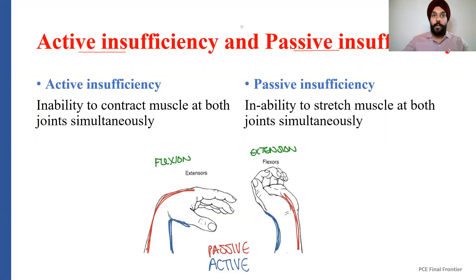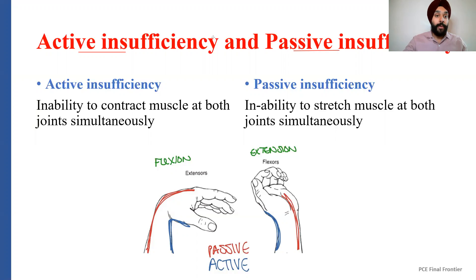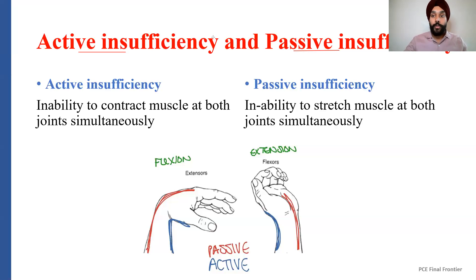Think about more two-joint muscles. Think about gastrocnemius, which is a plantarflexor and also helps in knee flexion. Think about quadriceps, which is a two-joint muscle that helps in knee extension and hip flexion. Think about the hamstrings, which is a two-joint muscle that helps in knee flexion and hip extension. Think about biceps, which helps at the shoulder and at the elbow — shoulder flexion, elbow flexion, and supination. So when you talk about active and passive insufficiency, it is only applicable for two-joint muscles.